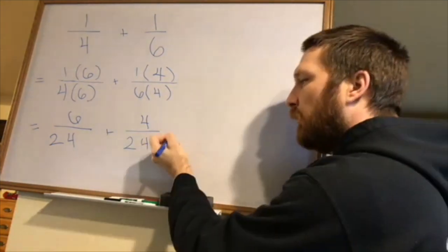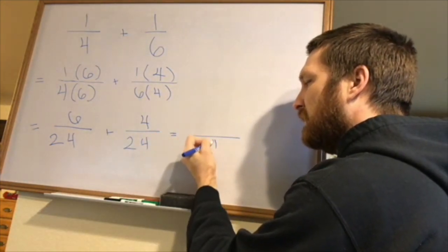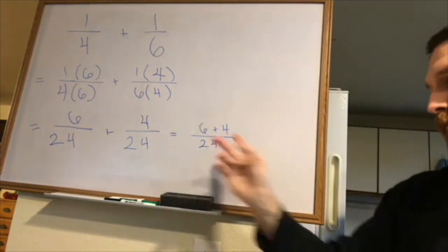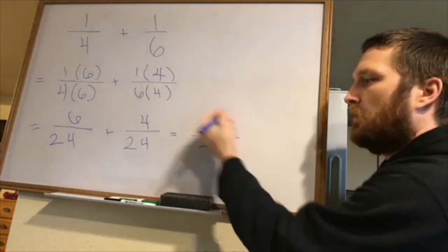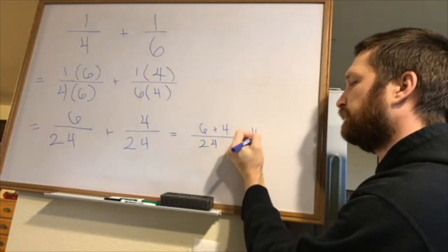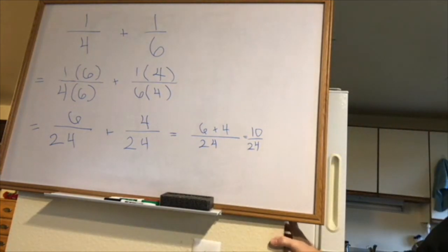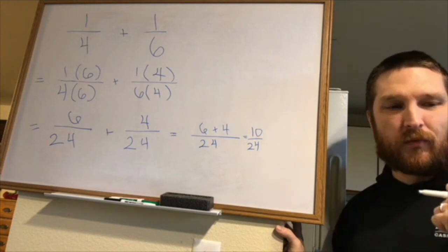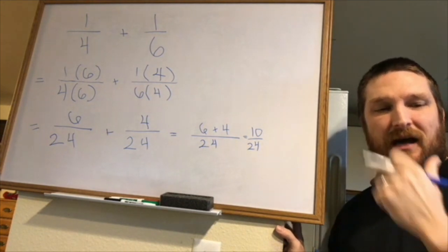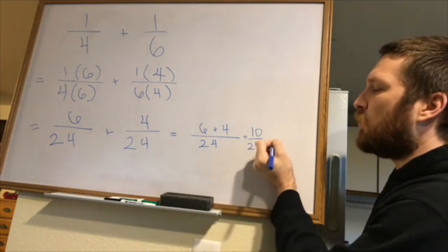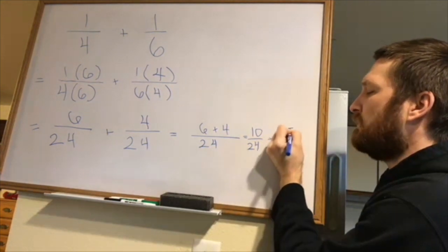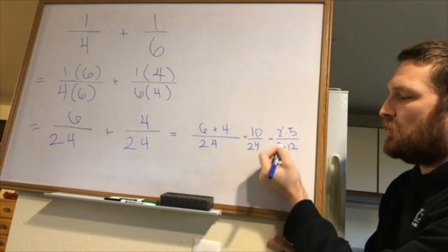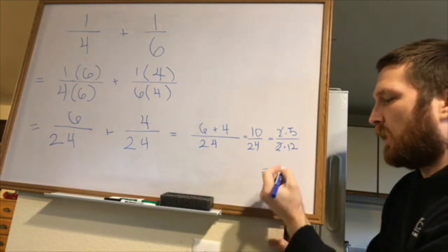I'll put them over that same denominator. Six twenty-fourths plus four twenty-fourths is a total of ten twenty-fourths. Six plus four is 10. Now I want to reduce this. I can see some common factors that can cancel out: 10 equals two times five, and 24 is two times 12. I can cancel the twos and I'm left with five over 12.